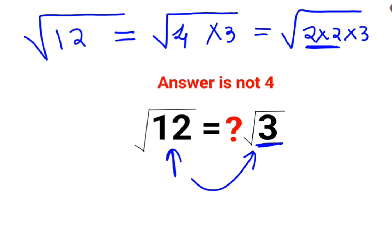If this was a cube root, we would need a group of 3 numbers. But since this is a square root, we need a group of 2 numbers.